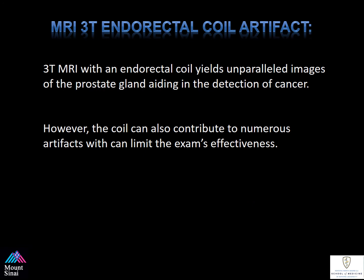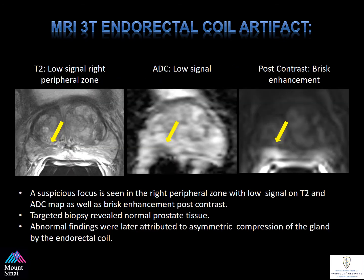3T MRI with endorectal coil yields unparalleled images of the prostate gland, aiding the detection of cancer. However, the coil quality can contribute to numerous artifacts that can limit the exam's effectiveness. As seen here, notice in the right peripheral zone there's an area of low signal, restriction on ADC, and early arterial enhancement on post-contrast — a suspicious focus. However, a target biopsy revealed normal prostate tissue. The abnormal findings were later attributed to the asymmetric compression of the prostate gland by the endorectal coil.